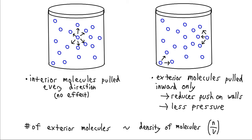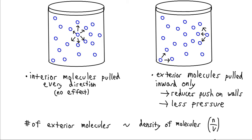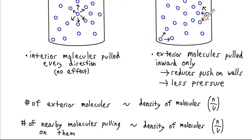So how can we write down what this value is going to be? Well, these molecules are going to have some average attraction to each other. Let's call that A. Now the number of these exterior molecules is going to be proportional to the density of the molecules in the container. If there's twice as many molecules in the container, there's going to be twice as many edge molecules. Likewise, the number of nearby molecules which are pulling these edge molecules inward is also going to be proportional to the density of the molecules in the container. If there's twice as many molecules in the container, then there's going to be twice as many molecules pulling these edge molecules inward.